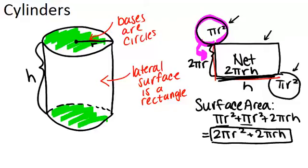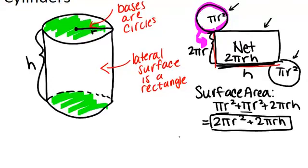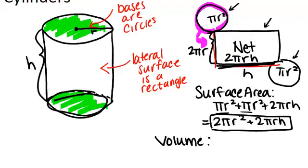Now what about volume? Since a cylinder is really just like a prism with a circular base, the volume is figured out in the same way as it is for a prism. The volume for a prism is the area of the base times the height. Well, in this case the area of the base is a circle, and we know that the area of a circle is just πr².